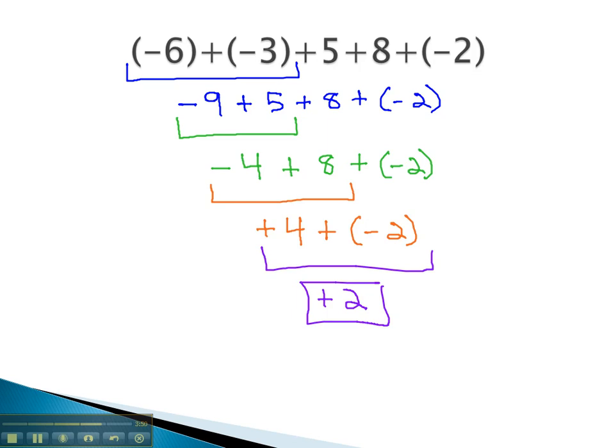Technically, the positive in front is not needed, we could just say the answer is 2. Working with several integers, we simply add from left to right, keeping in mind that if the signs match, we add and keep the sign, and if the signs are different, the larger number keeps the sign, and we subtract the numbers.